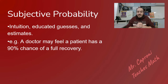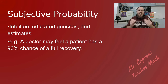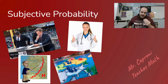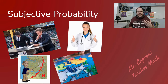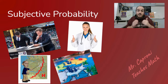The third type is subjective probability, which is the least favorite of statisticians because it's not based 100 percent on stats or math. Instead we're dealing with intuition, educated guesses, and estimates. This is where a doctor, a sports analyst, or a weatherman says something like there's a 32 percent chance this football team wins, or a doctor tells you there's an 80 percent chance you'll recover just fine. The weatherman isn't always correct, yet he keeps making those educated guesses based on what he knows.